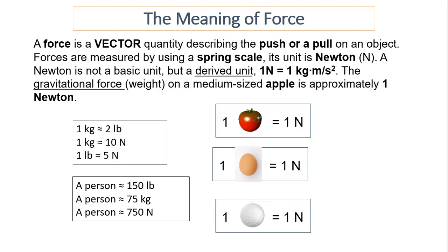A Newton is not a basic unit. Remember the three basic units: kilograms, meters, and seconds. Newton is a derived unit — derived means formed by combining basic units. So one Newton equals kilograms times meters divided by seconds squared.